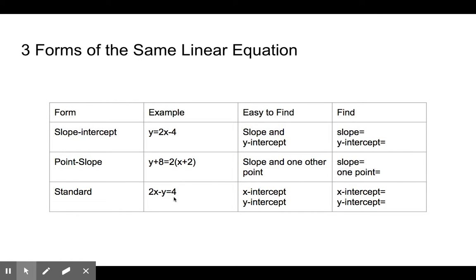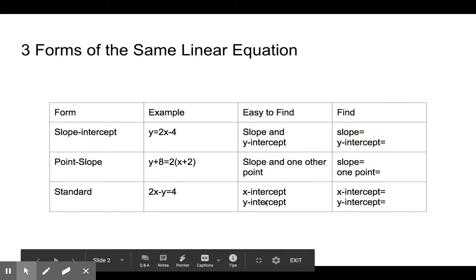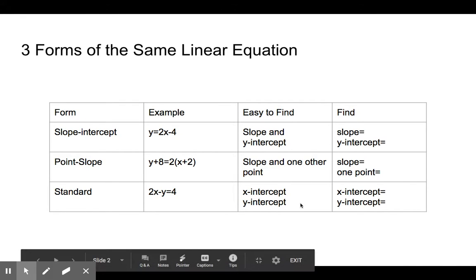Later on we'll look at standard form. Standard form is really good when we might not know the slope but we know the y-intercept and the x-intercept. If we know the two intercepts, standard form is really good for finding that, or vice versa — if we have the equation, it's very easy to find the x- and y-intercept.